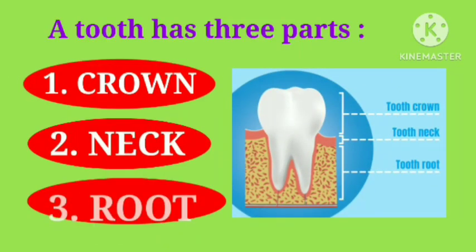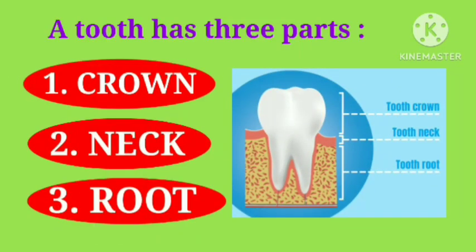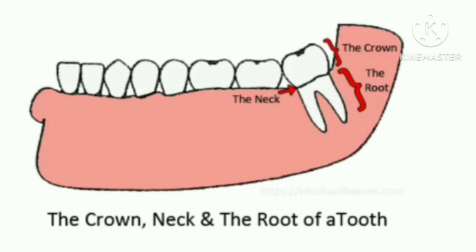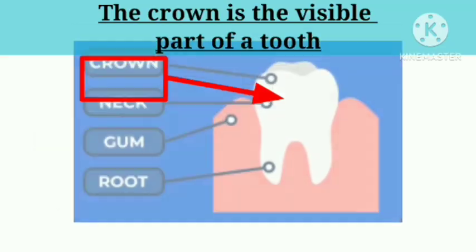A tooth has three parts. They are crown, neck and root. The picture shows the crown, neck and root of a tooth inside our mouth.